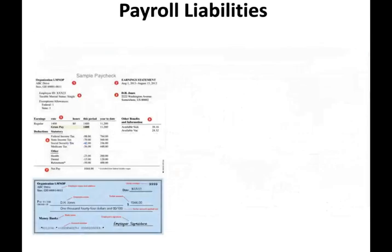In this session we'll talk about payroll liabilities, something you should be familiar with. Think about when you get paid — you receive a net amount, meaning something was deducted from it. Let's take a look at a sample paycheck. This paycheck is for D.H. Jones, and the company is organization L.M.N.O.P. This organization paid Mr. or Mrs. Jones $1,400 — that's the gross pay.